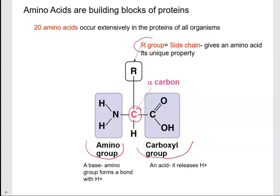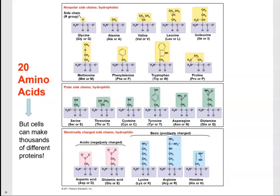A very important side chain that gives an amino acid its unique property is the R group. We have non-polar side chains that are hydrophobic — you can see the list of amino acids with those chains colored in yellow. We also have polar chains that are hydrophilic, and then acidic R groups that are negatively charged, and basic R groups that are positively charged.